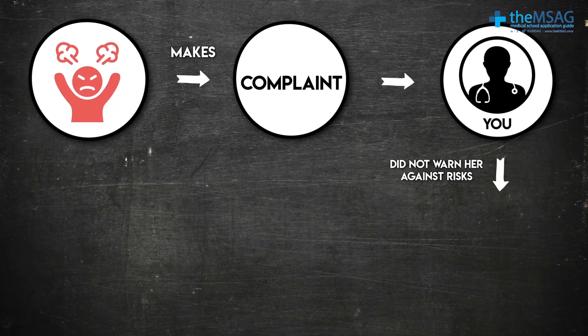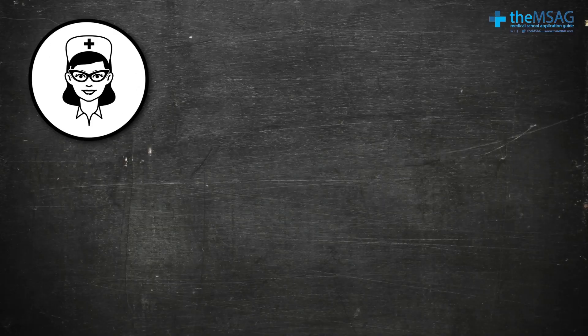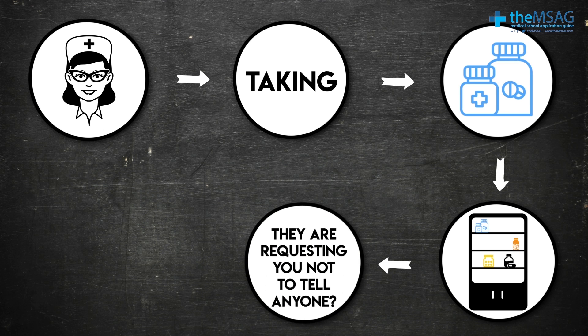It is important to use a good structure in any answer. Try and think about the domains which the following two examples would fall under. How would you respond to a patient that makes a complaint against you because you did not warn her about the risks of liver damage when taking paracetamol? How would you approach a scenario in which you have found a nurse taking medications from the drug cupboard and they are requesting you not to tell anyone? The first skill you need to develop is to identify which of the domains of Good Medical Practice might be compromised in each scenario, and then be able to logically discuss how you would address these types of problems in medical school interviews.